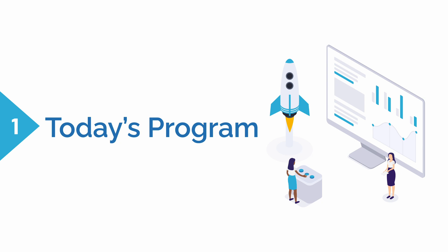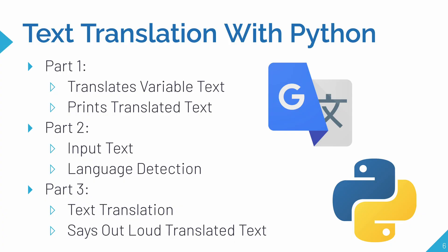So now let's check out today's program. Part one of text translation with Python in today's demo is we're going to take variable text, and you can add any text you want, and then it's going to translate that and then print it back to us. That's pretty simple. But part two, we're going to take our same translate variable text and then we're going to do language detection on that. It's going to detect the language and then print the language, like what language it is in. And then part three is, again, text translation, but then it'll say out loud the translated text into whatever language we're translating it to.